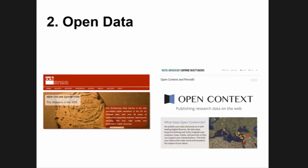Moving to open data: there are large digital research infrastructure projects and data archives such as the ADS and the ADMI project where you can archive and make data available. The problem is that many individual researchers simply don't know how to archive their data properly, don't have the money to do so, or don't see the usefulness of making their data available.